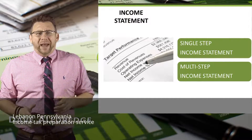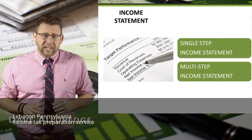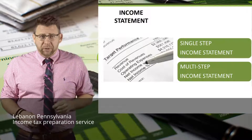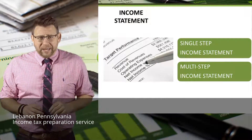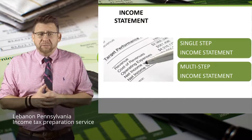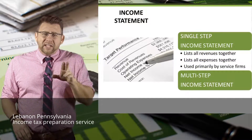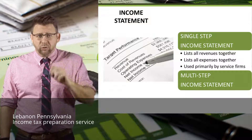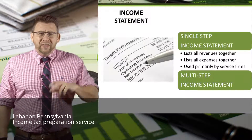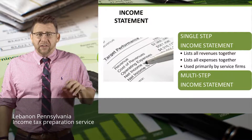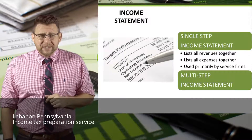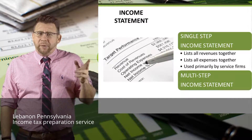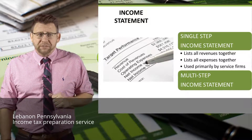There are two primary formats for the income statement: the single-step income statement, which you are already familiar with, and the multi-step income statement, which we will learn about in this podcast. The single-step income statement lists all revenues together and totals them for total revenue, then all expenses are listed together and totaled for total expenses. The difference is net income. This format is primarily used by service firms.